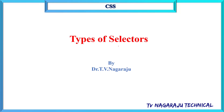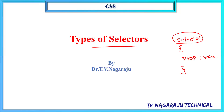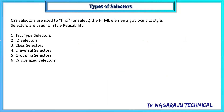In this session we are going to discuss different types of selectors. We already know the syntax of a selector: selector, opening bracket, some property, value. The selector is an HTML tag, and these are the properties and values. The types are: tag or type selector, id selector, class selector, universal, grouping, and customized.